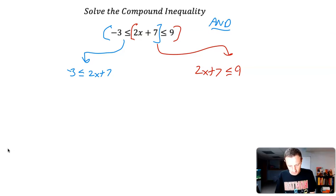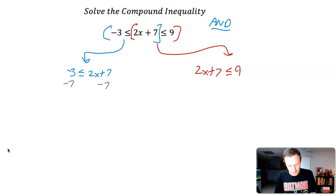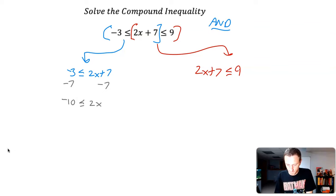On the first one in blue, I'm going to subtract seven from both sides — we're solving inequalities just as we would solve an equation; the same rules apply. Negative three minus seven is negative ten, less than or equal to two x. Then I divide by two to solve for x, giving me negative five less than or equal to x.